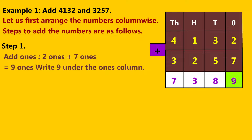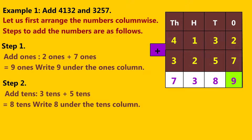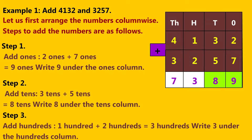Step 2: Add tens. Three tens plus five tens is equal to eight tens. Write eight under the tens column. Step 3: Add hundreds. One hundred plus two hundreds is equal to three hundreds. Write three under the hundreds column.